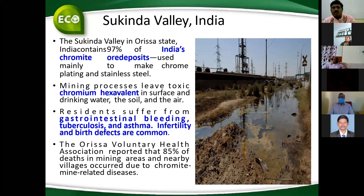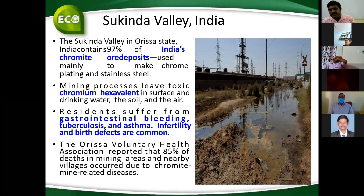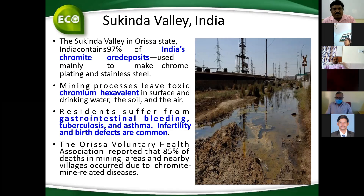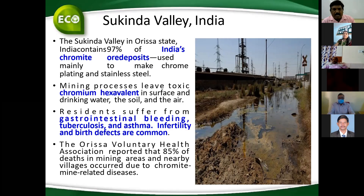Sukhinda Valley, India, contains 97% of India's chromate ore deposits, used mainly for chrome plating and stainless steel. The mining process leaves toxic hexavalent chromium in surface and groundwater, soil, and air. Residents suffer from gastrointestinal bleeding, tuberculosis, asthma, and infertility. The Voluntary Health Association reported that 85% of deaths in mining areas and nearby villages occur due to chromate mine-related diseases.